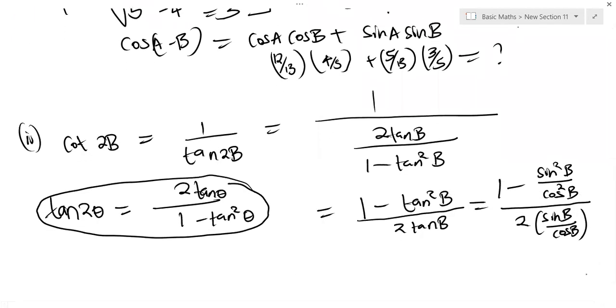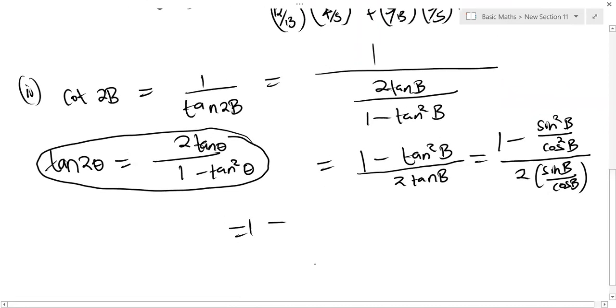So 3 over 5, 4 over 5. So this is 1 minus sine B is 3 over 5, so 3 over 5 squared. 3 over 5 squared, and all this is divided by 4 over 5 squared, over 2 sine B is 3 over 5 divided by 4 over 5.